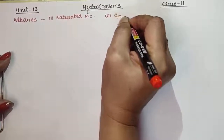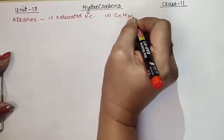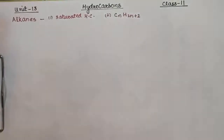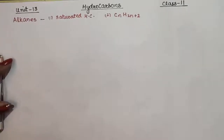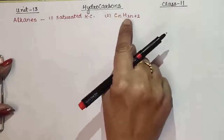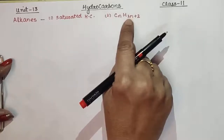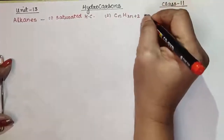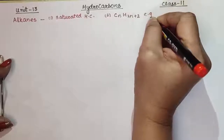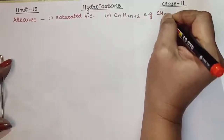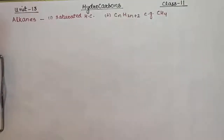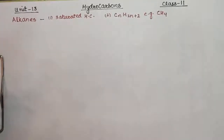The general formula of alkanes is CnH2n+2, where n is the number of carbon atoms. If n equals 1, then hydrogen will be 2×1 + 2 = 4. So the first member of the alkanes homologous series has the formula CH4, which is 1 carbon and 4 hydrogen. We call it methane, the simplest alkane, where carbon and hydrogen form 4 sigma bonds or single covalent bonds.